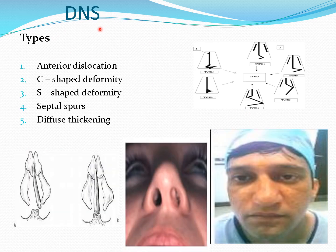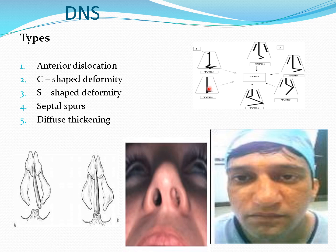Deflected nasal septum can be divided into: anterior dislocation — you will see the anterior margin of nasal septum in one of the nostrils while raising the tip of the patient; C-shaped nasal deflection — there is obstruction on one side and a wide patent nasal cavity on the other side with compensatory hypertrophy of the inferior turbinate; S-shaped deflection — the septum is deflected posteriorly on one side and anteriorly on the other; septal spur — a sharp deflection at the junction of bone and cartilage, typically between the vomer and the maxillary crest; and sometimes there is diffuse thickening.